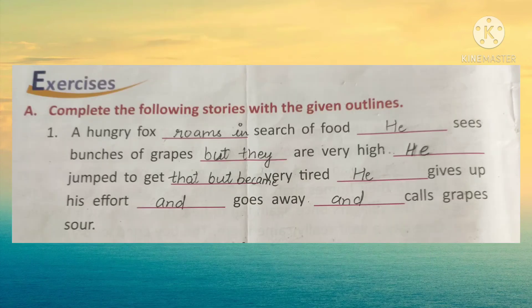Now let's complete the story. A hungry fox roams in search of food. He sees a bunch of grapes which were very high. He jumped to get them but became very tired. He gives up his effort and goes away, calling the grapes sour.